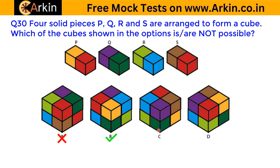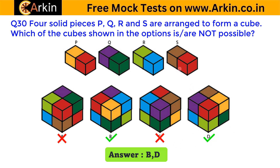Here again, if we see this combination — purple with green is this one, then this one is here, this is here, and this could be this one — so this is again possible, meaning this will not be a correct answer. Now in this option, if we see blue and green are in the same solid, but here they are apart — it's not possible for them to be in the same solid. So this is not possible and is again one of the correct answers. The correct answer here will be B and D.